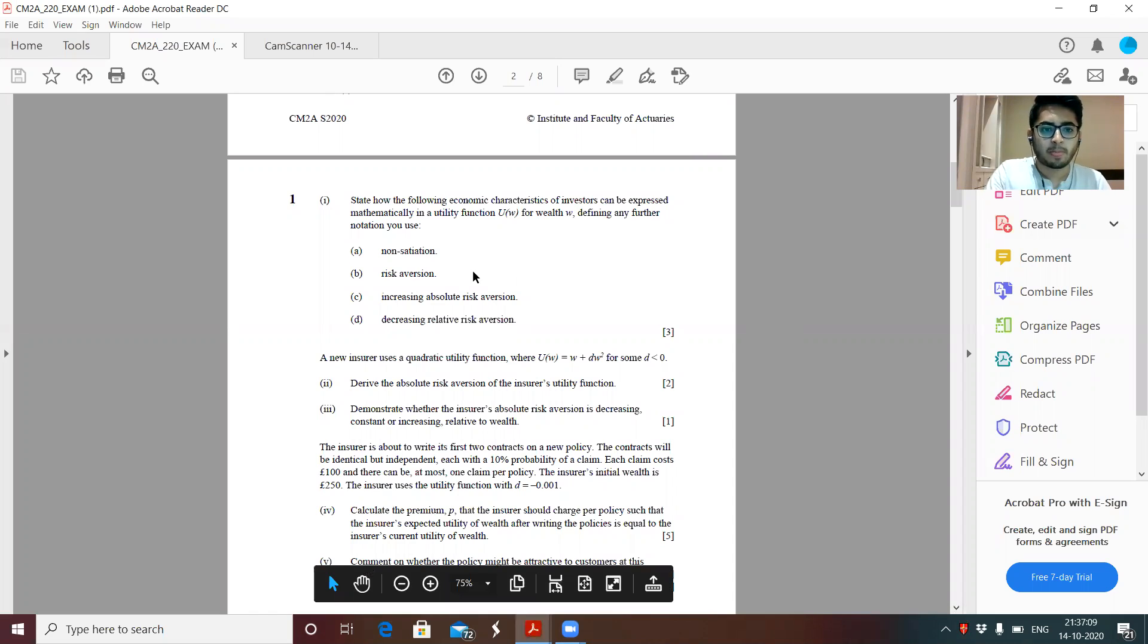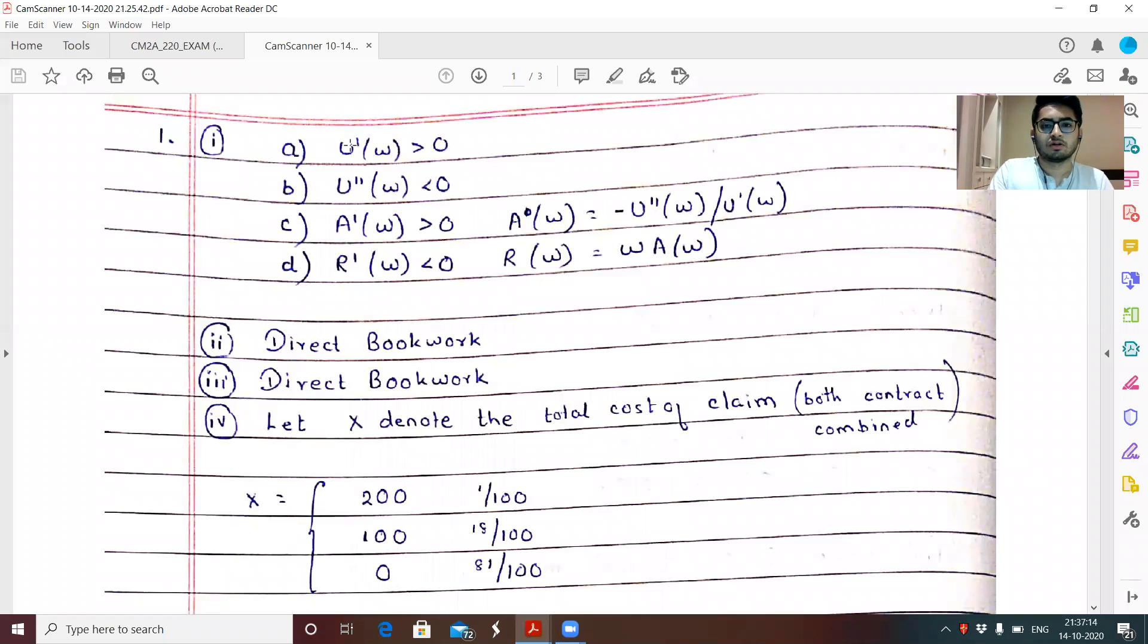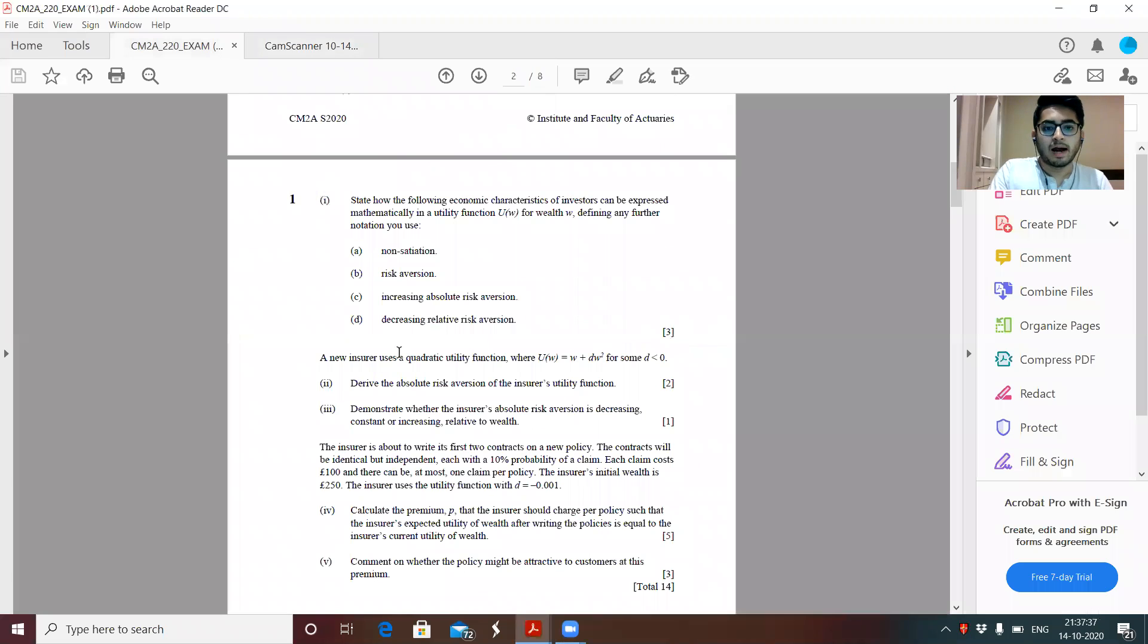So now let's start with the discussion. The first question, part one was pretty straightforward. Non satiation, u dash w greater than zero, risk aversion, second derivative less than zero, increasing absolute risk aversion. So a dash w is greater than zero. And I've also defined what is a w. Relative risk aversion should be decreasing. So r dash w is less than zero.